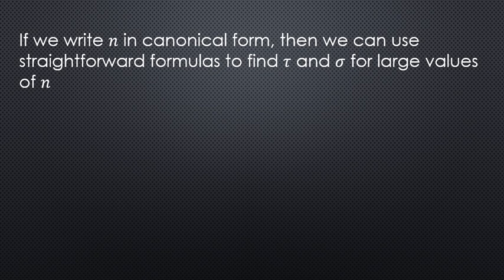So how can we figure out τ and σ for any positive whole number n, no matter how large it is? Well, a bit earlier on in the course, we talked about writing a number in its canonical form. And that made it a lot easier to find the GCD of two numbers. We're going to appeal to that same form once more. And if we write our n value in that form, then we can use the following straightforward formulas to find τ and σ for any n value that we have.